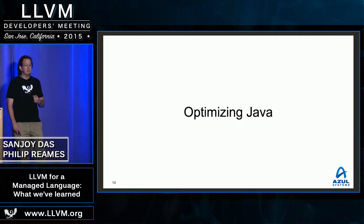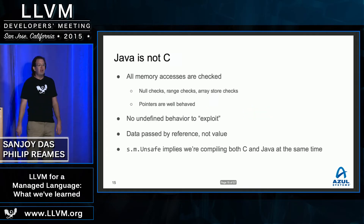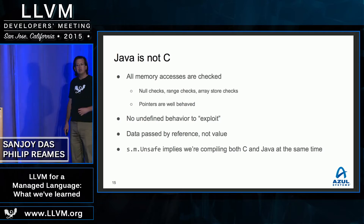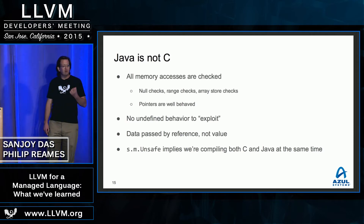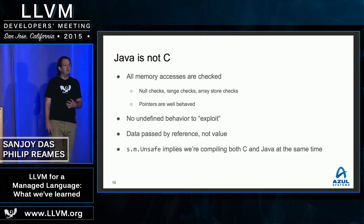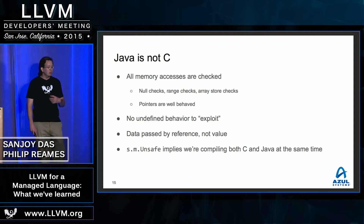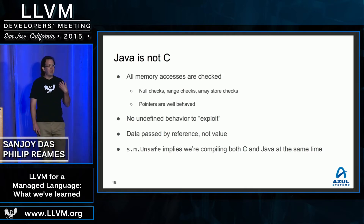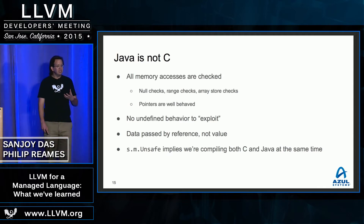Now that we've got a compiler, we need to get some good code out the back end. What does Java actually look like? Java is a safe language where every memory access is checked — there is at least a null check, and often a range check and possibly a type check, involved in every memory access. Java does not have undefined behavior in the same sense as C; we have well-defined overflow semantics on integer overflow, for example. However, from the compiler's perspective, we actually don't get to assume all of these nice things, because there's a loophole called sun.misc.Unsafe that allows raw memory access. So what we actually end up compiling is a weird hybrid of something between Java and C.